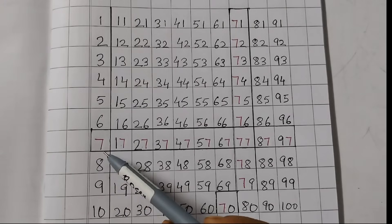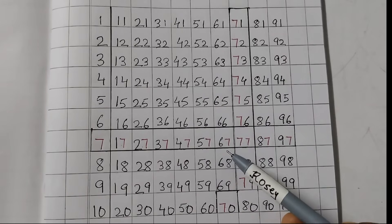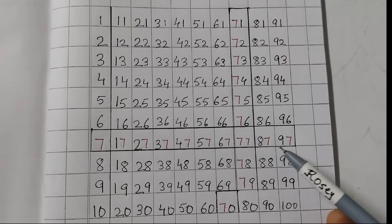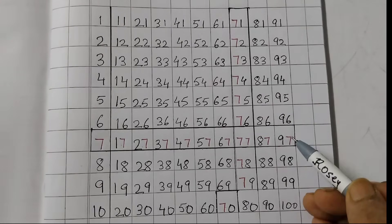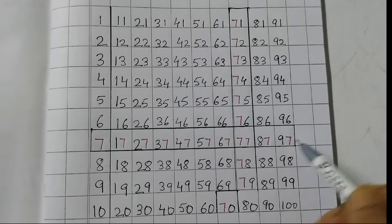If you see here, 7, 17, 27, 37, 47, 57, 67, 77, 87, 97. And if you see the ones place, that is the units place, this is the units place or ones place, 7 occurs 10 times.